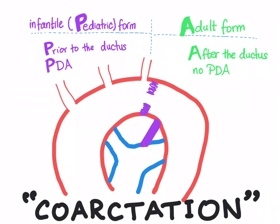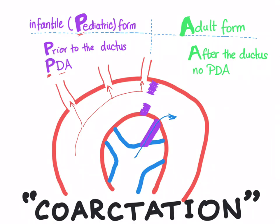The oxygenated blood will go to the three main branches of the aortic arch, supplying the upper extremity and upper half of the body. However, the pediatric form is also associated with a PDA — a patent, open ductus arteriosus. With Eisenmenger syndrome here, deoxygenated blood goes through the aorta and the lower half of the body suffers from cyanosis — you will have lower extremity cyanosis with the pediatric form. So the coarctation is prior to the ductus and associated with a patent ductus arteriosus.